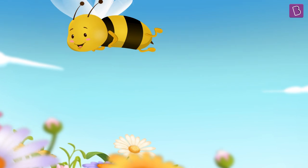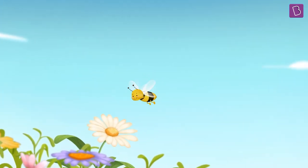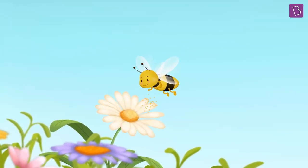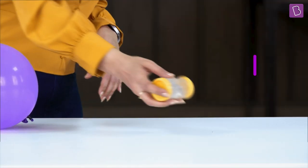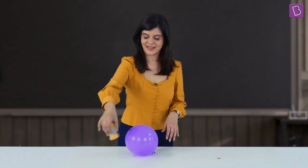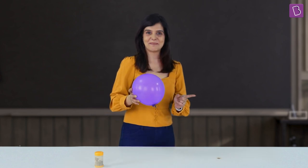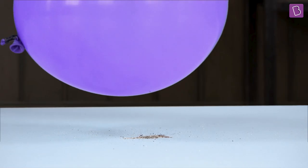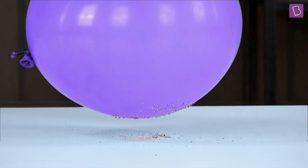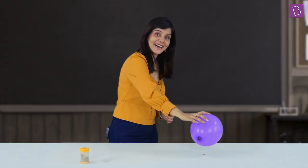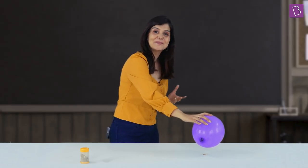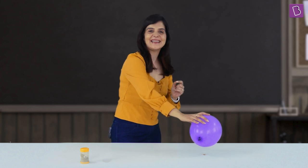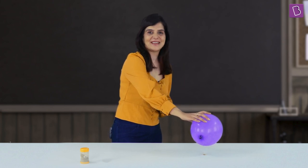So how does our positively charged bee attract pollen grains towards itself? Let me show you. How about I rub this balloon on my hair and see what it does to this pepper? The pepper is attracted to the balloon. That's exactly how bees attract the pollen grains as well.